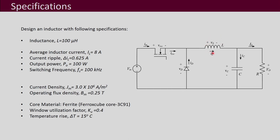We need to design an inductor for a buck converter with an inductance of 100 microhenry. The average inductor current is 8 amperes and the ripple allowed is 0.625 amperes. Output power is 100 watts and the switching frequency chosen is 100 kilohertz.